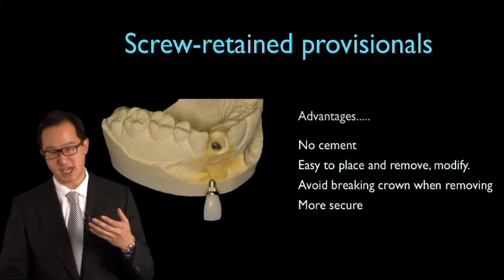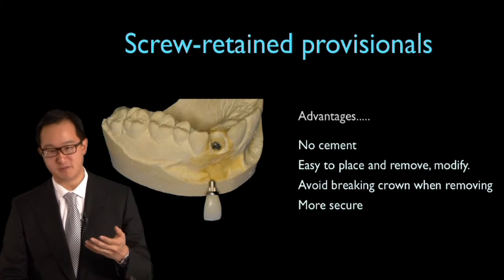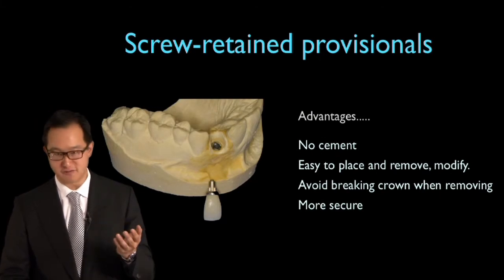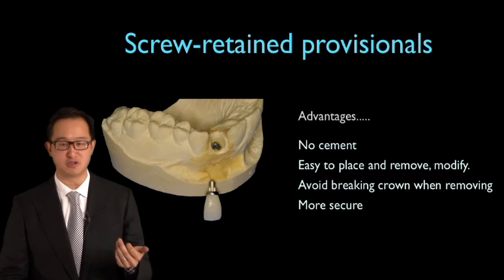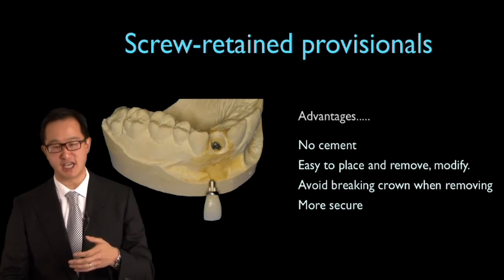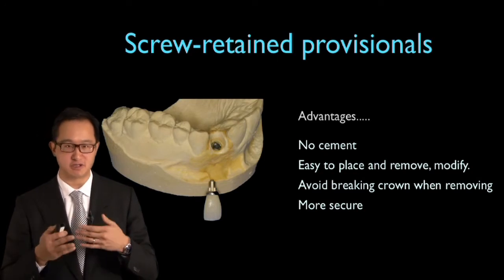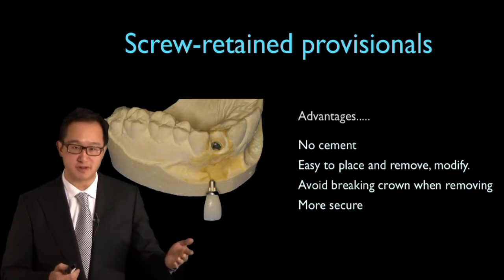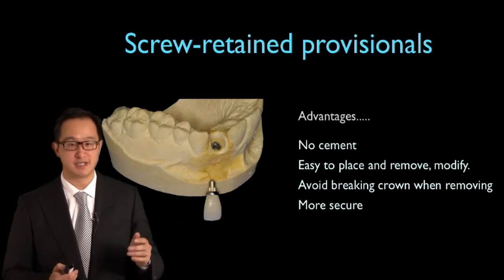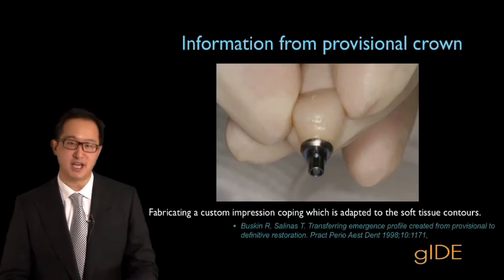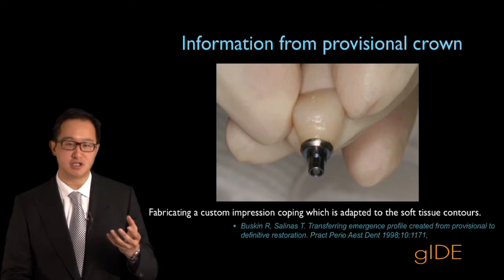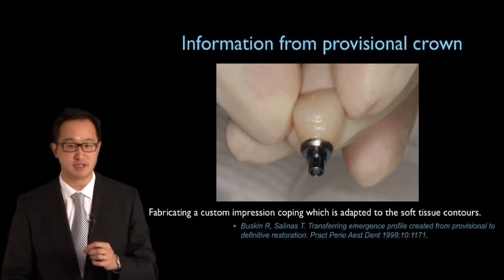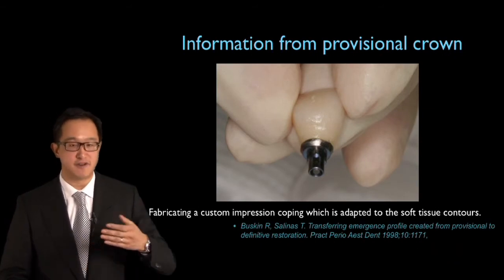We'll show you how to develop provisionals using different forms from cement-on to screw-retained, and how we modify that for our soft tissue aesthetics by using a restorative leaf-based technique. And then how we transfer that information from our provisional crown to our final impression.